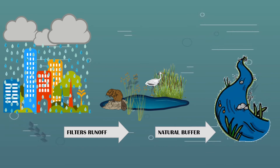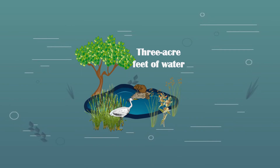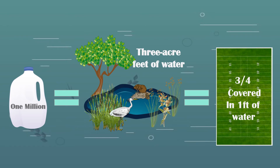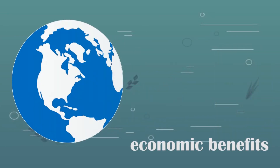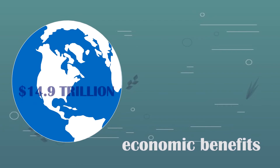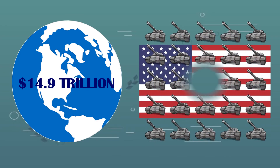Both constructed and natural wetlands have proven that they can reduce the frequency and intensity of floods by soaking up and storing a significant amount of flood water. Wetlands can typically store about three acre-feet of water, or 1 million gallons — about three-quarters the size of a football field covered one foot deep in water.